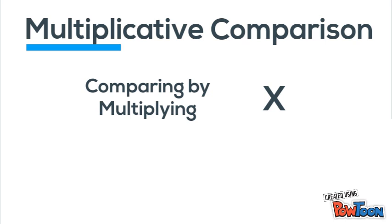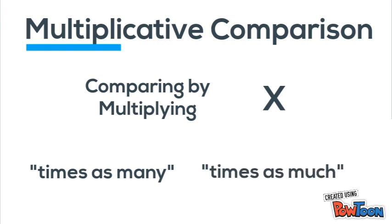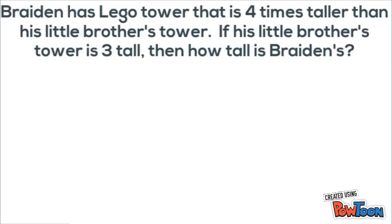There are specific phrases used in these types of comparison problems: 'times as many' and 'times as much.' Whenever you see those phrases, you know two things are being compared through multiplying. Let's look at our first example.